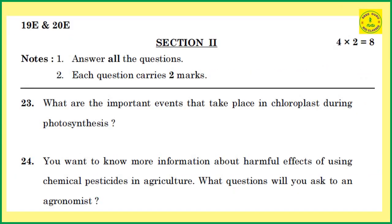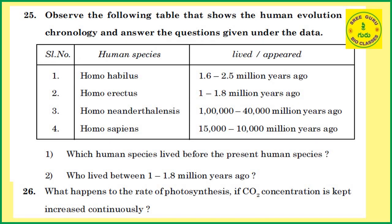Section 2: answer all questions. Each question carries two marks, so 4 into 2 equals 8 marks for this section. For example, a question like: what are the important events that take place during cell division? These types of questions are asked here.